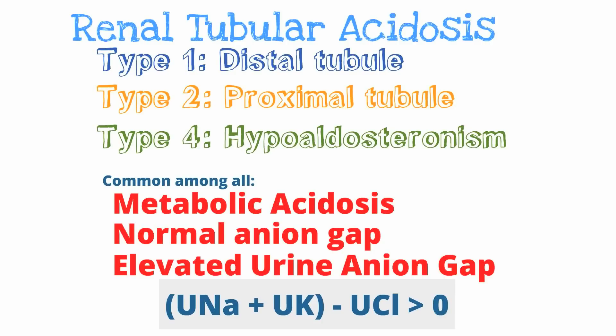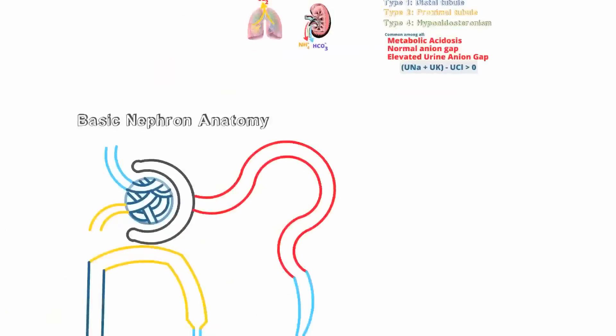To calculate the urine anion gap, sum the urine sodium and urine potassium, then subtract the urine chloride from the total. If the urine anion gap is greater than zero, then the metabolic acidosis is due to renal tubular acidosis. But if it is negative, then it is due to gastrointestinal losses. This is an easy way to identify if a metabolic acidosis is due to renal tubular acidosis.